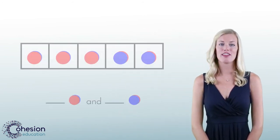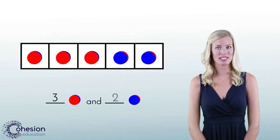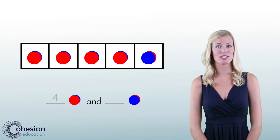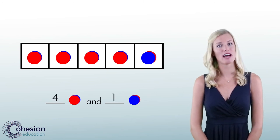Students should practice the different ways to make the number five by using the same two colors but changing the quantity of each color. Three red counters and two blue counters—this makes five counters altogether. Four red counters and one blue counter—there are still five counters altogether.